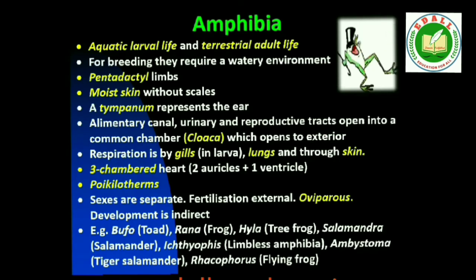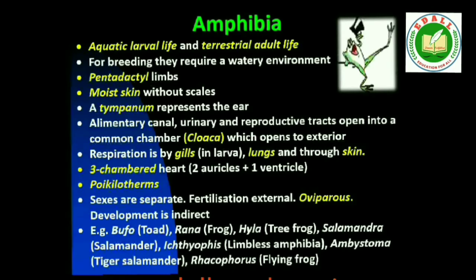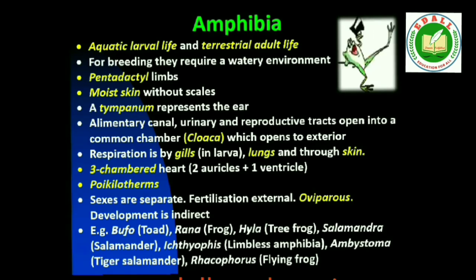Class Amphibia: As the name indicates (Greek: amphi = dual, bios = life), amphibians can live in aquatic as well as terrestrial habitats. Most have two pairs of limbs. Body is divisible into head and trunk; tail may be present in some. The amphibian skin is moist without scales. The eyes have eyelids. Tympanum represents the ear. Alimentary canal, urinary and reproductive tracts open into a common chamber called cloaca, which opens to the exterior. Respiration is by gills, lungs and through skin. Heart is three-chambered (two auricles and one ventricle). These are cold-blooded animals. Sexes are separate. Fertilization is external. They are oviparous and development is indirect. Examples: Bufo (toad), Rana (frog), Hyla (tree frog), Salamandra (salamander), Ichthyophis (limbless amphibia).